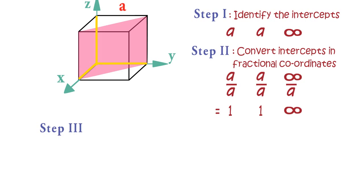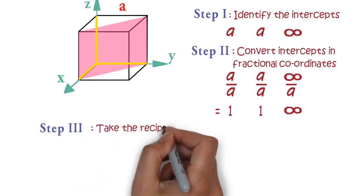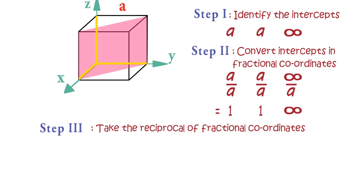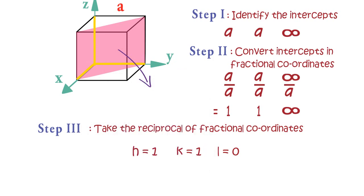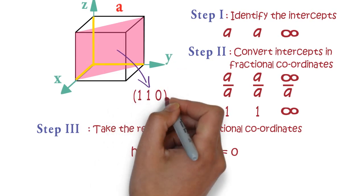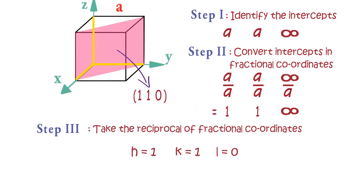Now in the third step, just take the reciprocal of fractional coordinates and it will give you the values of Miller Indices h, k, and l. So here the plane can be represented by (1 1 0) inside a small bracket without any comma.